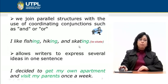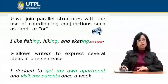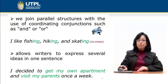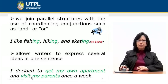This kind of parallel structure allows writers to express several ideas in one sentence. For example: 'I decided to get my own apartment and visit my parents once a week.' In this example we have 'get my own apartment' and 'visit my parents,' so we have 'get' and 'visit' — the verb in the same form.